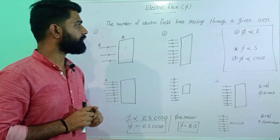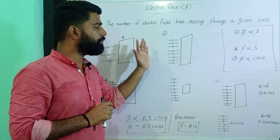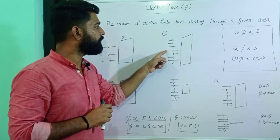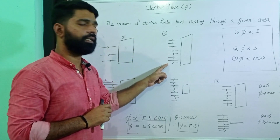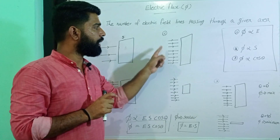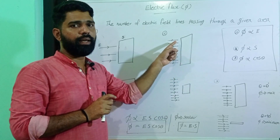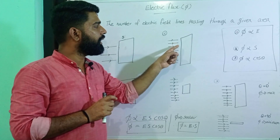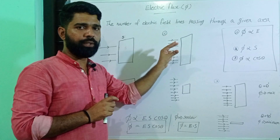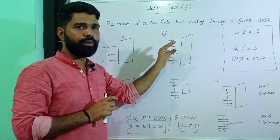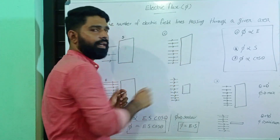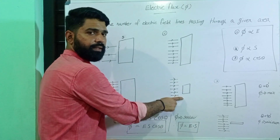Second condition: this is the same number of electric field lines — one, two, three, four, five, six, seven, eight — eight numbers of electric field lines passing through the surface. Then, if we reduce the surface area, we reduce the surface area. The number of electric field lines remains the same.